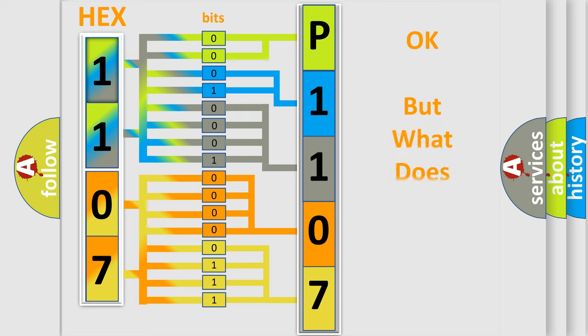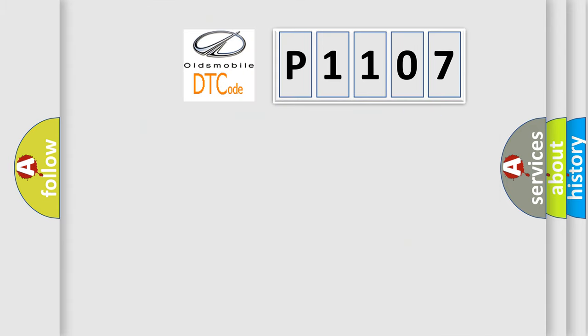The number itself does not make sense to us if we cannot assign information about what it actually expresses. So, what does the diagnostic trouble code P1107 interpret specifically for Oldsmobile car manufacturers?